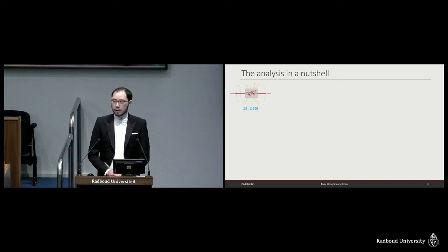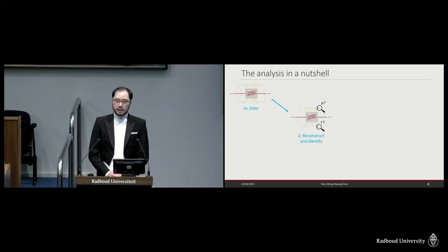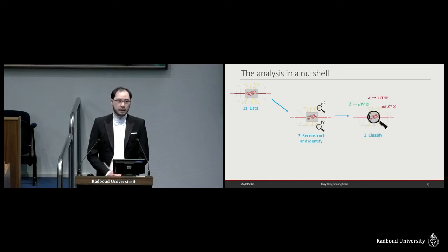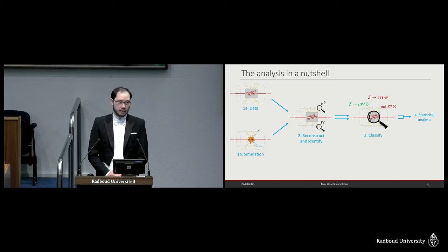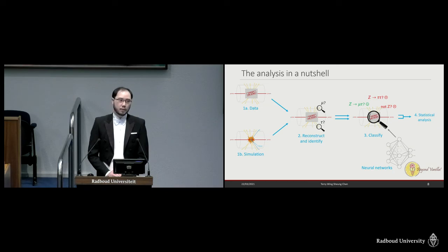In a nutshell, the analysis consists of four steps. The first is to do data acquisition using the LHC and ATLAS. After which, we have to reconstruct and identify — meaning that we have to turn the digital readout of the detector into actually meaningful physical quantities of the particles, and identify which particle we are observing. After which, we need to classify the collision events, where we determine whether a collision event observed is likely a signal event or likely a standard model background event. Moreover, in order to compare what we observe with theories, we have to perform simulation and statistical analysis. One of the things that make my thesis different from similar experiments in the past is the use of neural networks in the classification step.